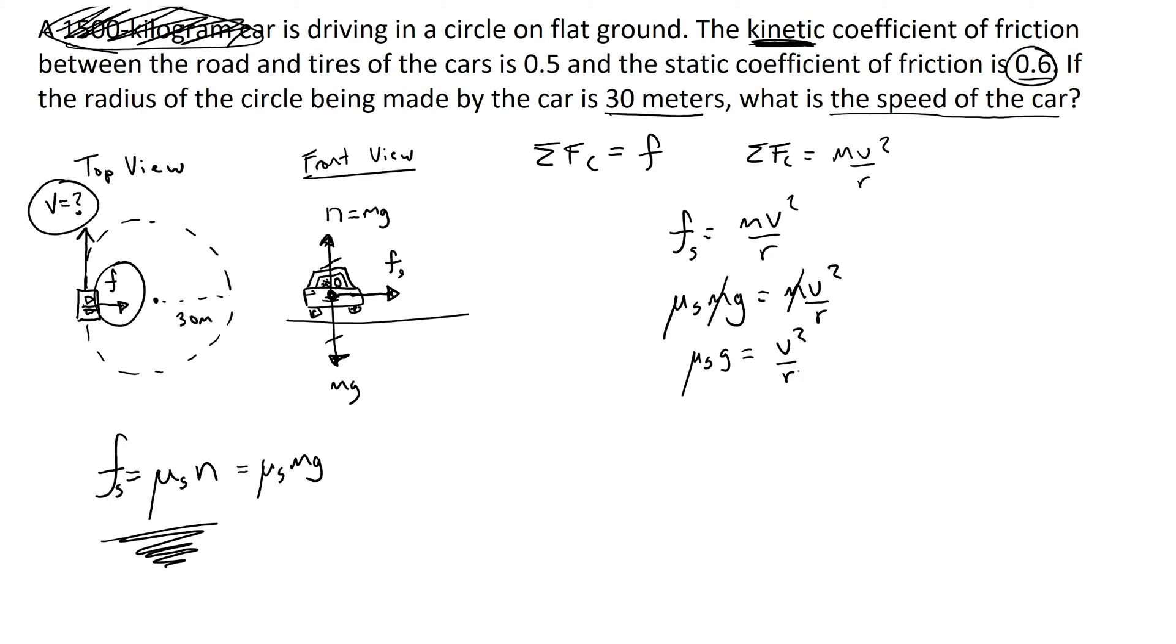And the coefficient of friction times the acceleration due to gravity is equal to v squared over r. Now solving for the velocity, you just multiply both sides by r. So you're going to get mu s times gr, and then you do the square root. This is the type of answer that you would need to pick for an AP question. And when we plug in our numbers, we're going to get 0.6 times 10 meters per second squared, times 30 meters. Plug all of that in and you will get 13.4 meters per second.